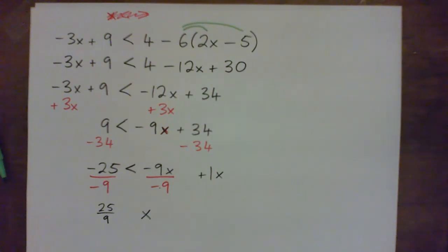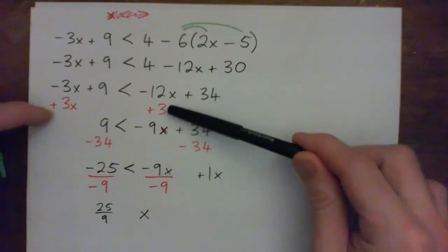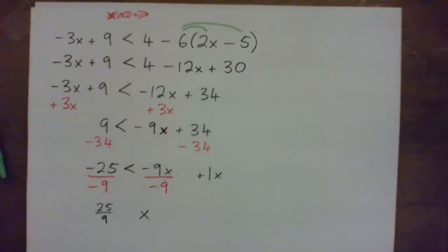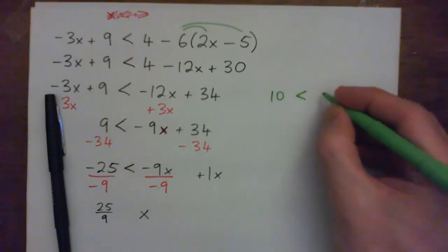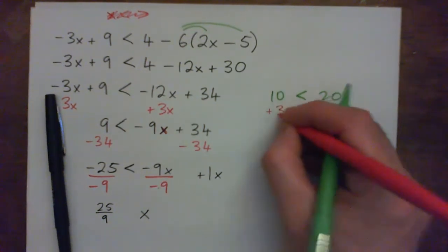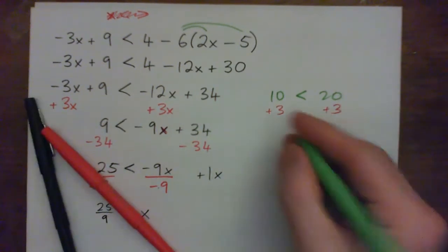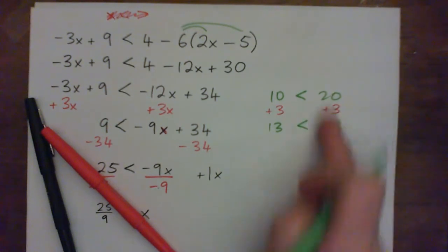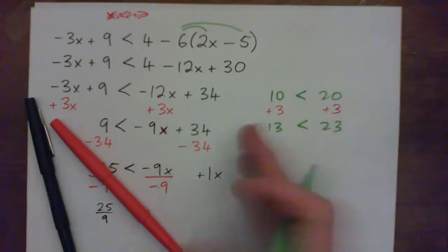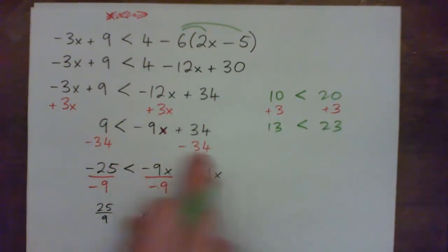By the way when we added something to both sides we didn't change the inequality sign. For example, if you have 10 which is less than 20 and you add 3 to both sides, on the left you'd have 13 and on the right you'd have 23. And 13 is still less than 23. So adding to both sides doesn't change the direction.